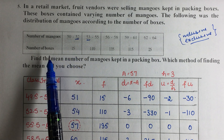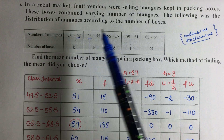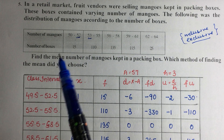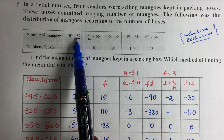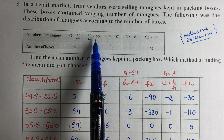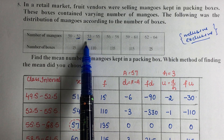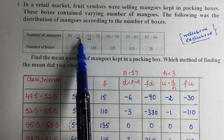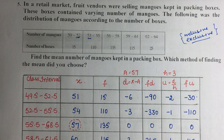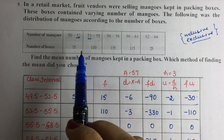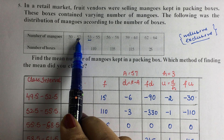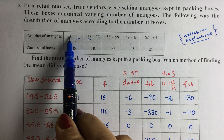In inclusive intervals, both boundary points are included. To convert inclusive intervals to exclusive (which we need for calculations), we adjust the boundaries: add 0.5 to the upper boundary and subtract 0.5 from the lower boundary. So for the interval 50–52: the upper becomes 52.5 and the lower becomes 49.5.